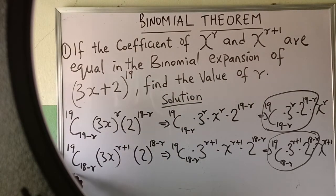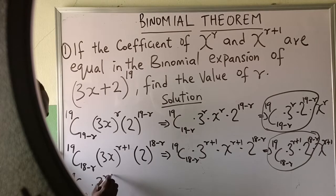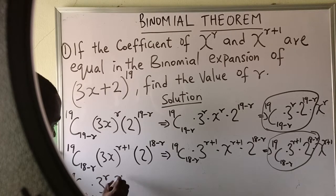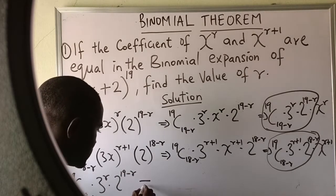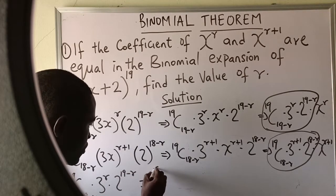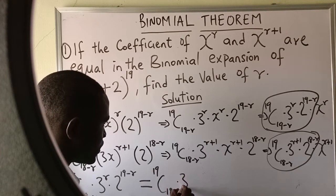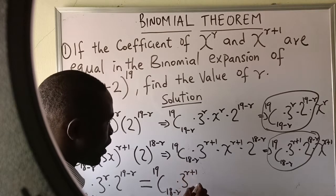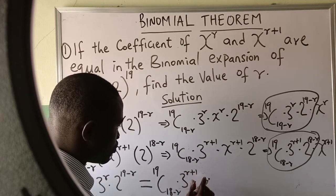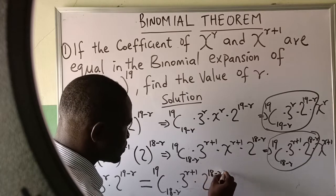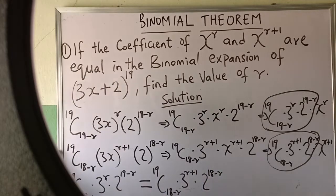We have obtained both coefficients, and the question says their coefficients are equal. So we equate them: 19 combination 19 minus r, times 3 to the power r, times 2 to the power 19 minus r, equals 19 combination 18 minus r, times 3 to the power r plus 1, times 2 to the power 18 minus r. Now it's just a matter of solving for r.